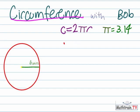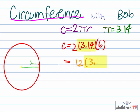So now plugging it in, we get 2 times 3.14 times 6. And to simplify that, we're going to get 12 times 3.14.